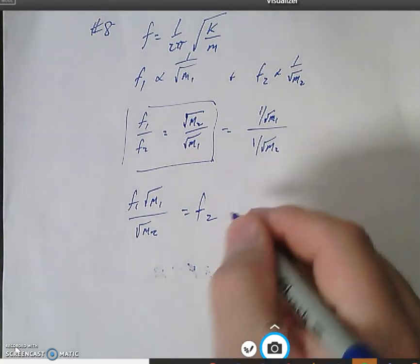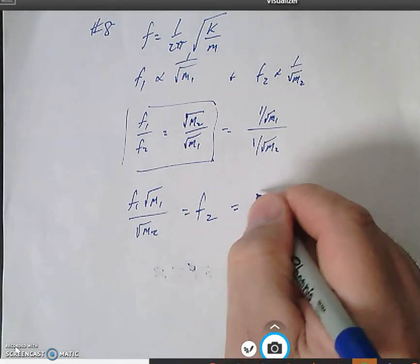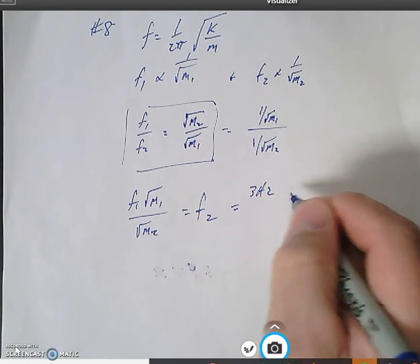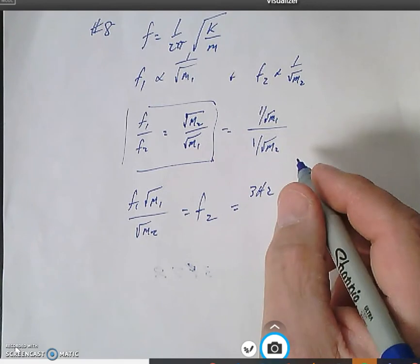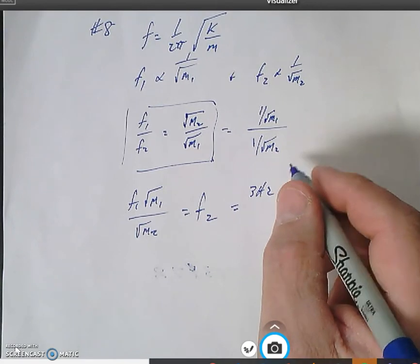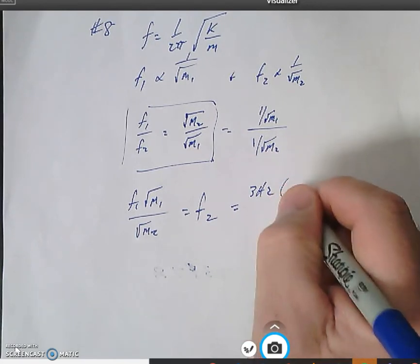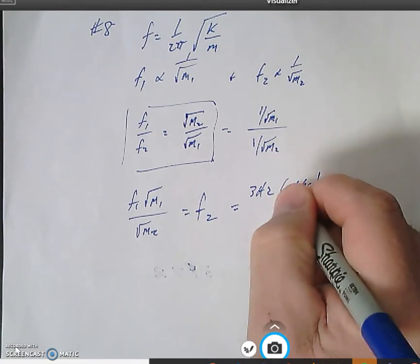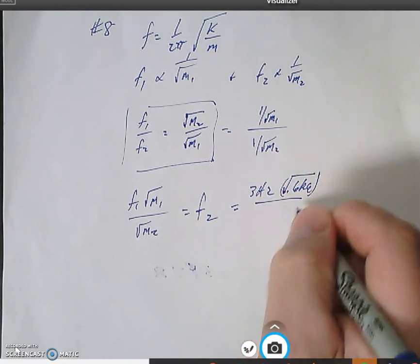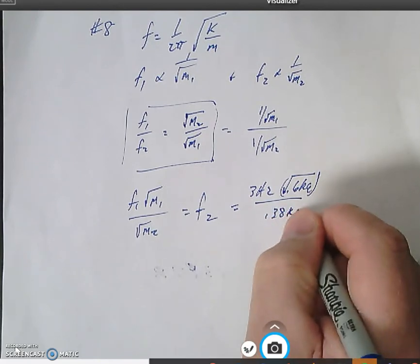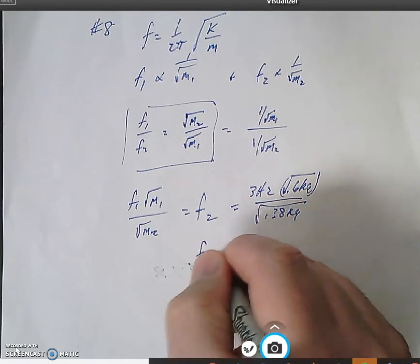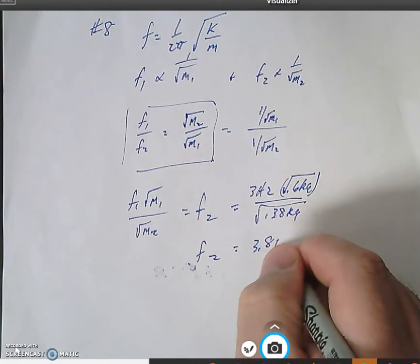So if I plug in for frequency one, that's going to be 3 hertz, and the mass associated with that is going to be 0.6 kilograms. Times 0.6 kilograms square rooted, divided by the square root of 0.38 kilograms, is going to give me my f2 which becomes 3.8